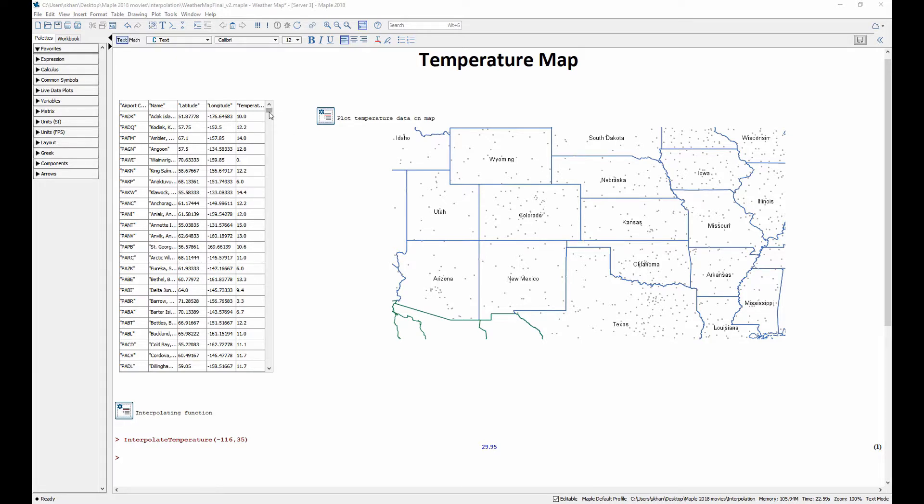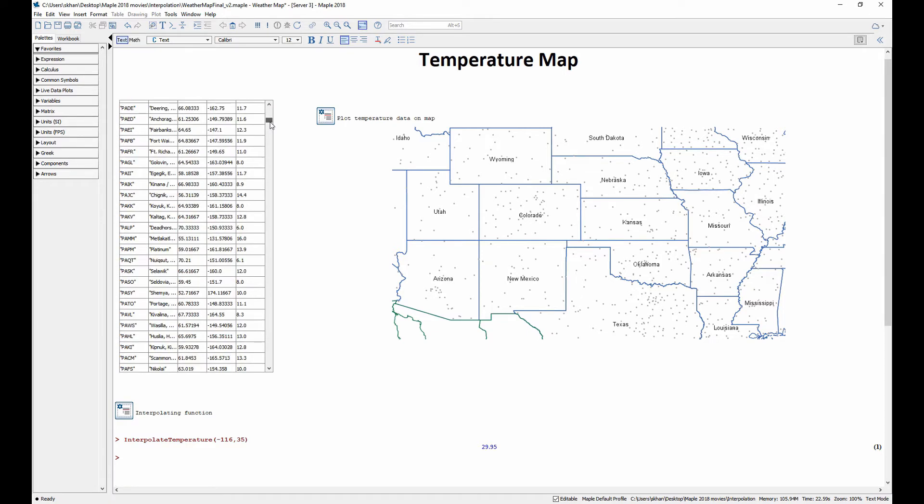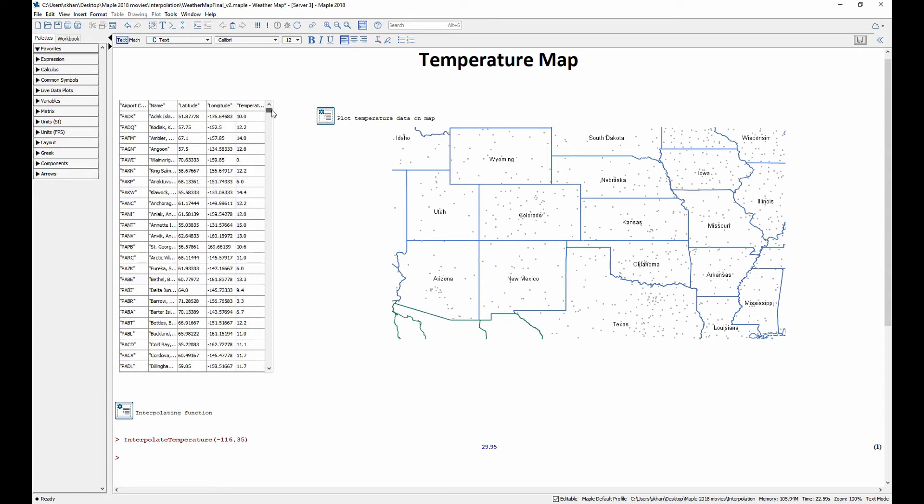This application contains data from weather stations scattered across the US. The data includes the temperature and the longitude and latitude of the station.